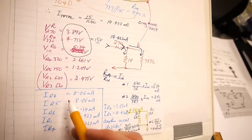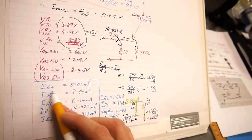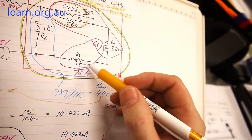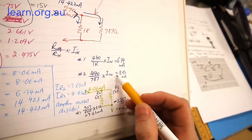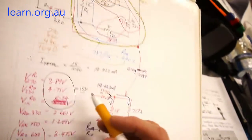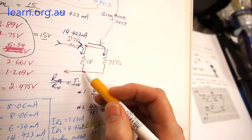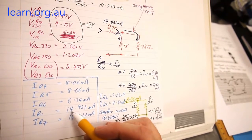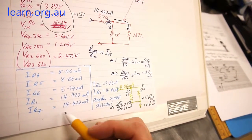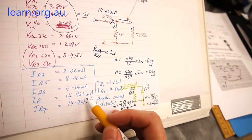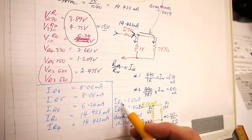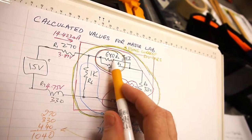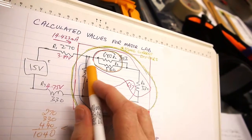The voltages are fairly straightforward, but then we come to the currents. IR4 and IR5, 8.06 milliamps, we worked that out with that current divider. Then IR6, the 1k resistor, 6.34 milliamps. IR1, the first input resistor, and IR7, the output resistor, both shared the same total current of 14.423 milliamps.